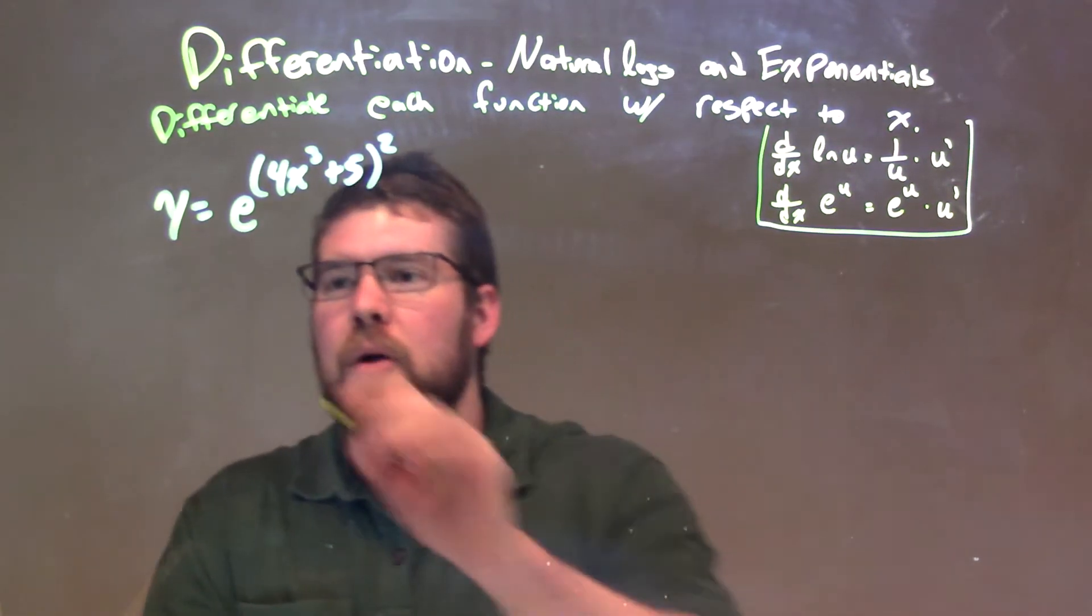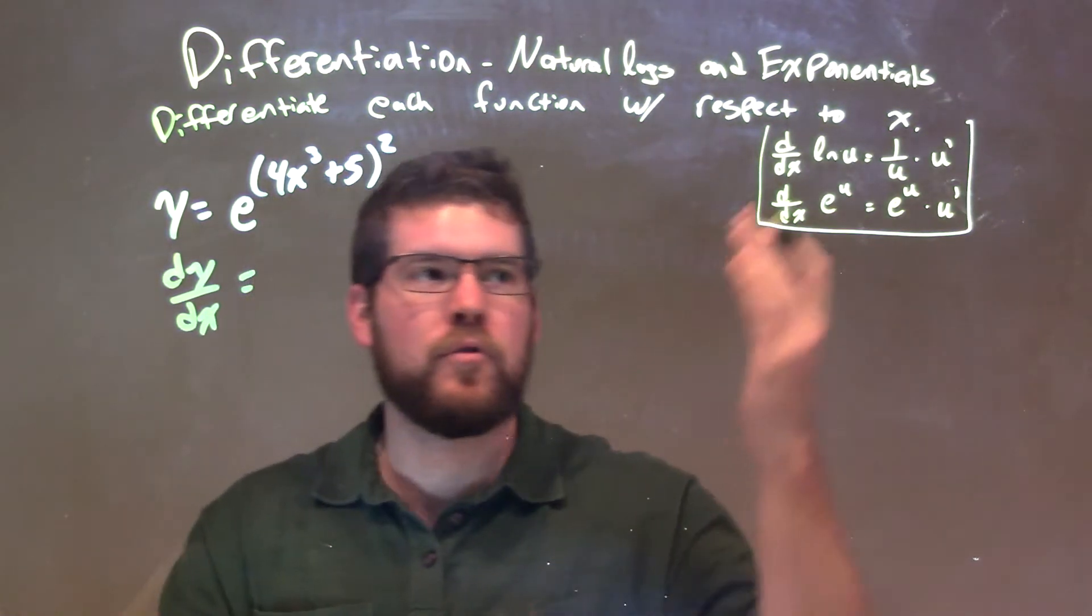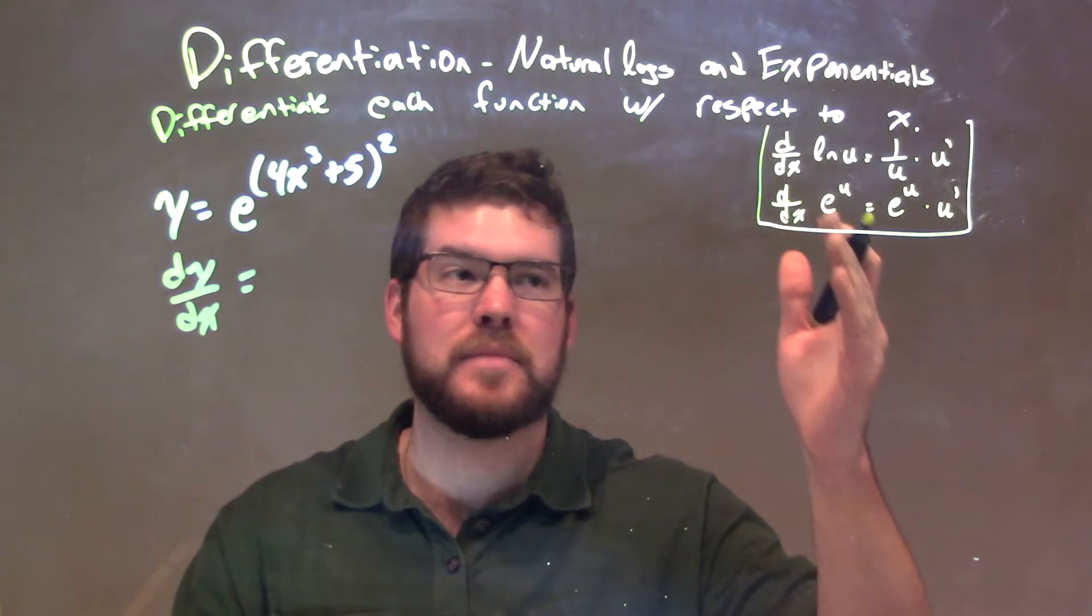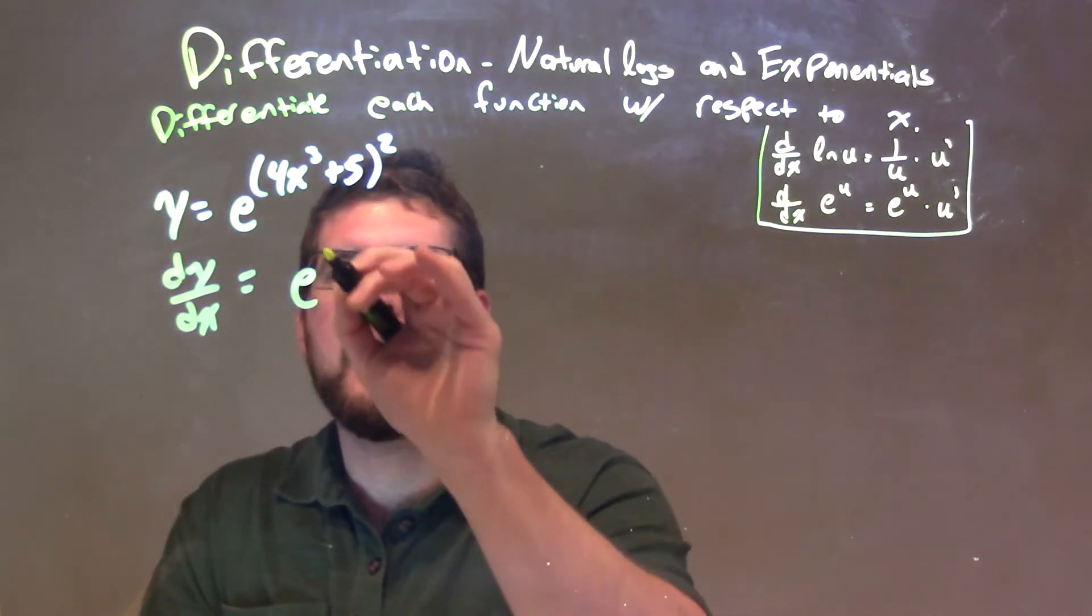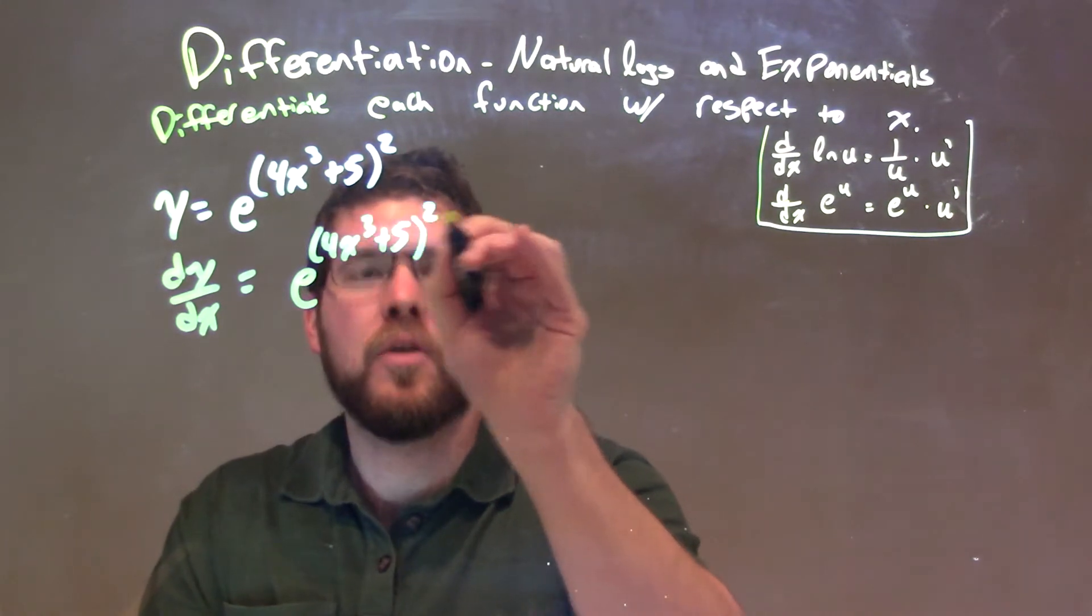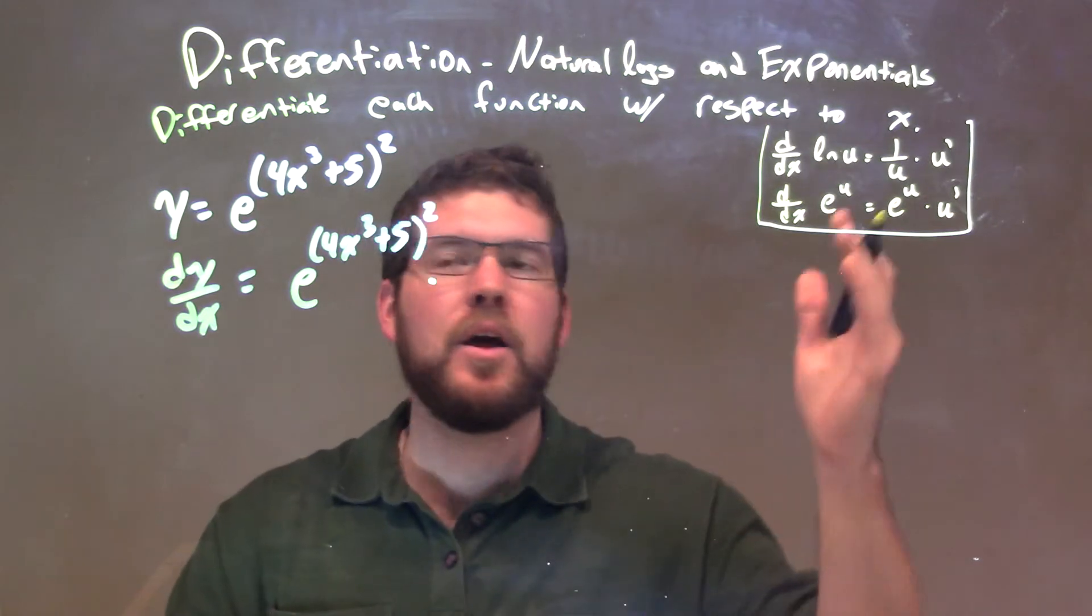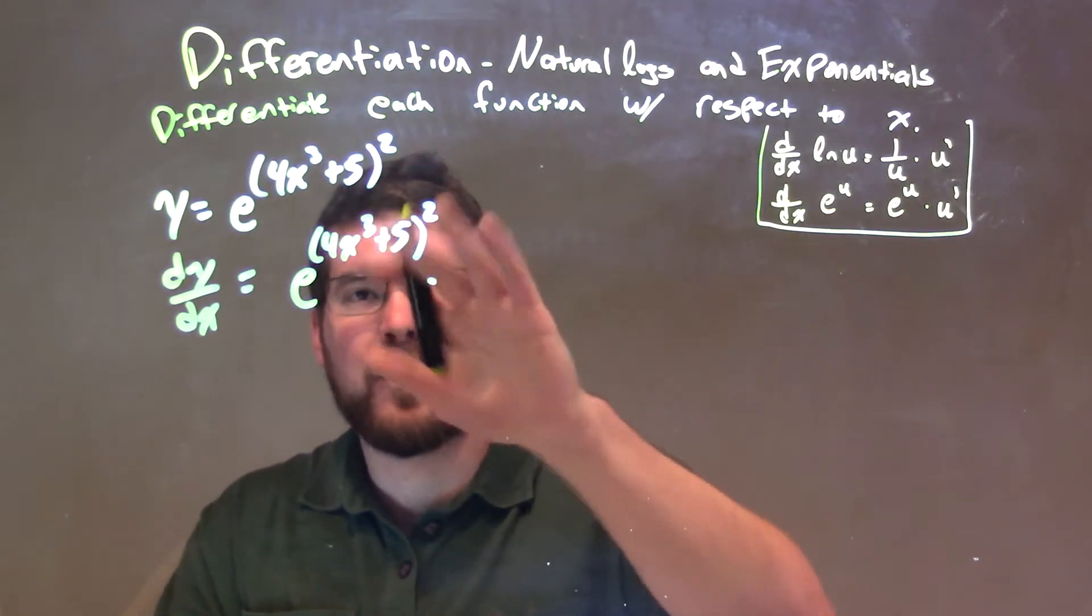So let's take the derivative. We have dy dx is equal to, derivative of e to the u is e to the u times u prime. So we keep everything the same: e to the 4x to the third plus 5 squared. From there, we need to multiply that by the derivative of the exponent.